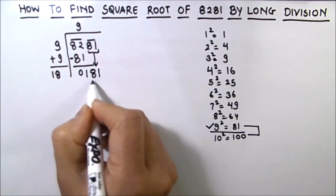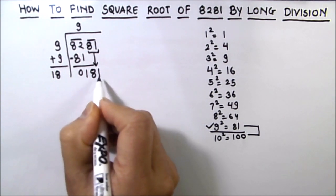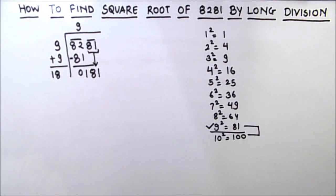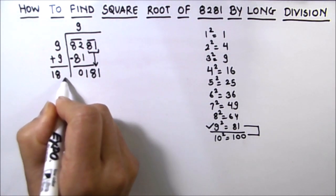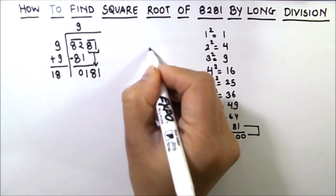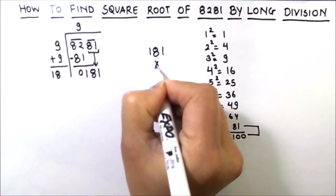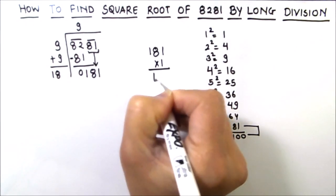So our next dividend is 181, and the divisor we need to find by using the trial and error method by annexing a digit in front of 18. So let's try 181 times 1. 181 times 1 is 181.